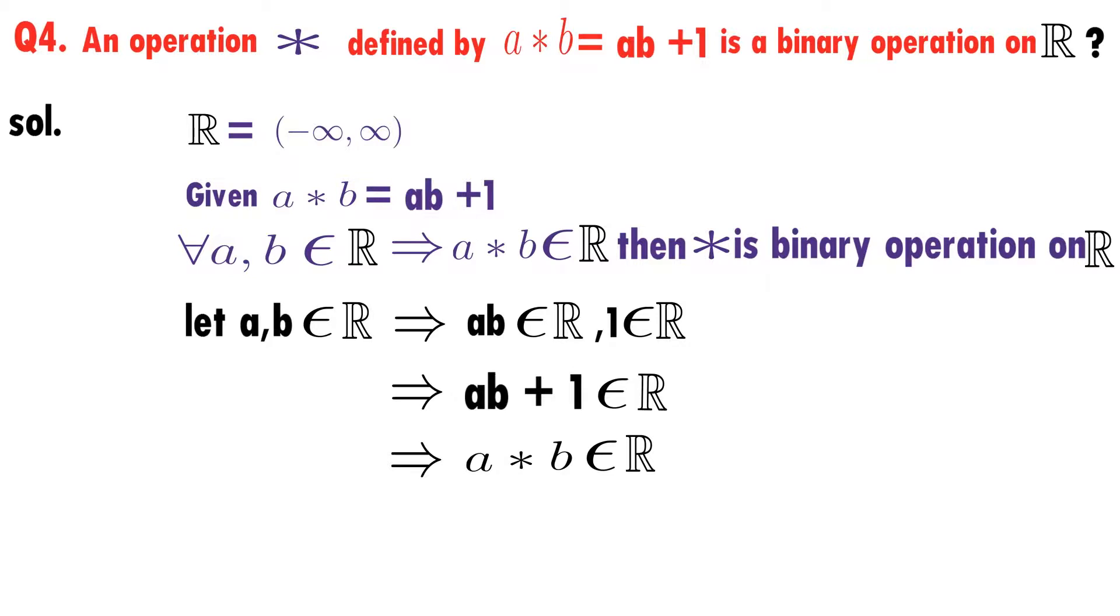a * b is a real number. Therefore, for every a, b belongs to ℝ implies a * b belongs to ℝ. From this we can conclude that for any two real numbers a, b belongs to ℝ implies a * b belongs to ℝ. Therefore, *